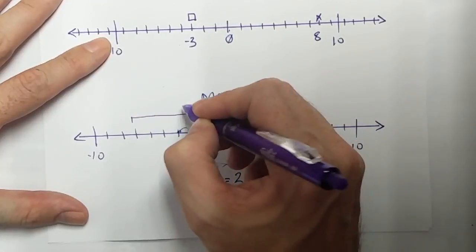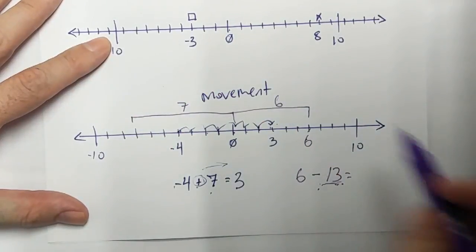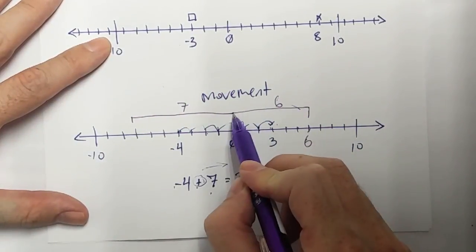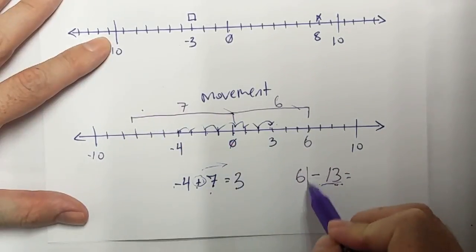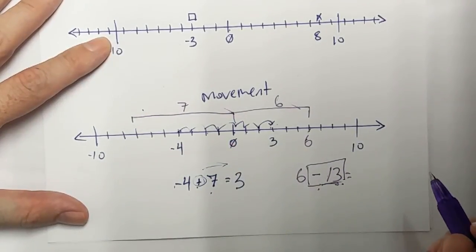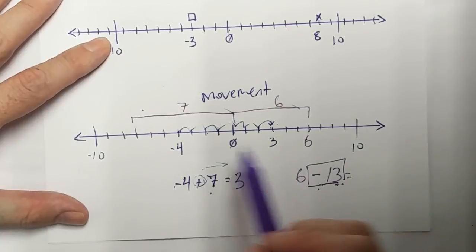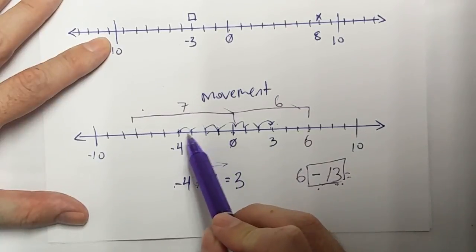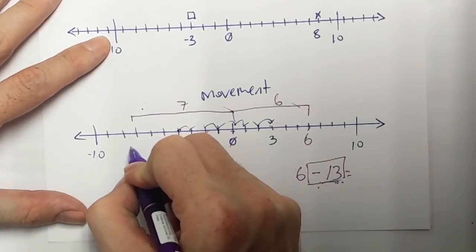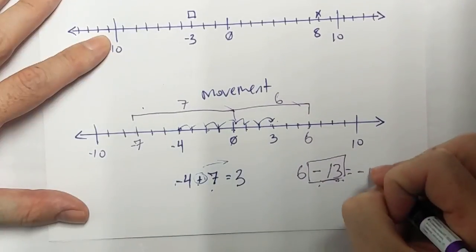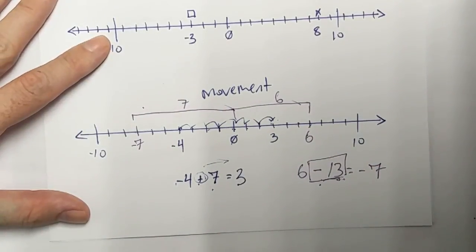So I'm going to go all the way down here. I'm going to go 7 more. So I move to the left 6 plus 7. I've moved a total to the left of 13. Where am I going to end? Well, I know this is 1, 2, 3, 4, 5, 6, 7. I finish off at negative 7.